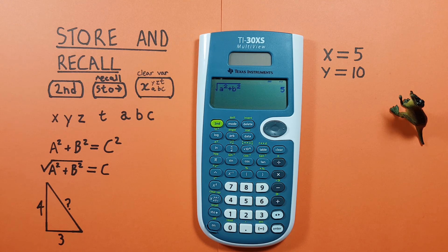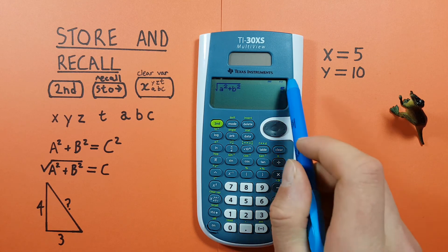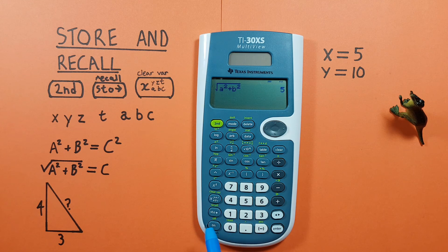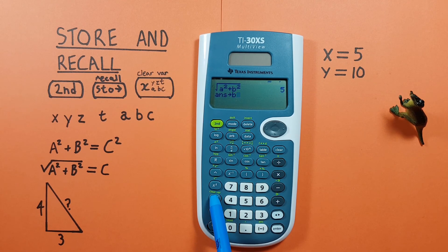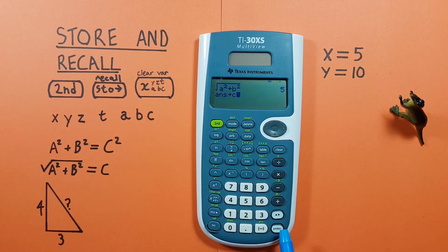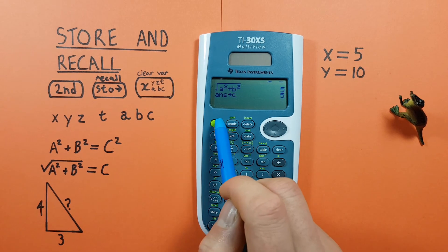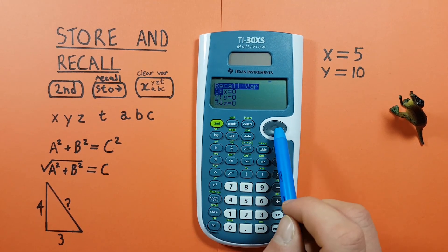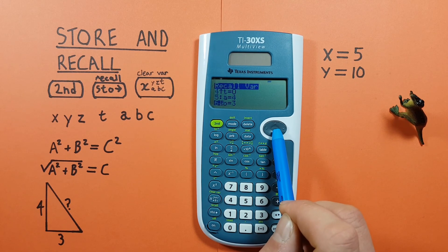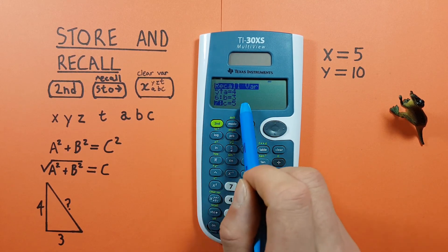And now if we wanted to save that, we could store that result in our memory slot as well. So if we press store, cycle to our c, and store that just so we have it. We can then double check it's in there with the recall value. And there's our a, b, and c values.